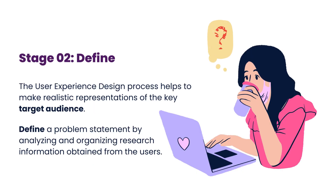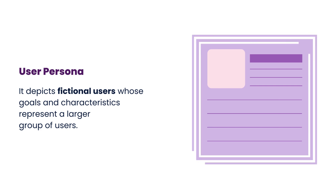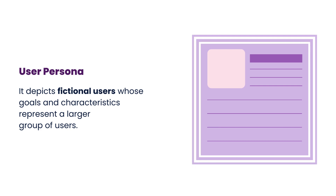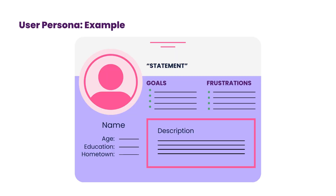Stage 2: Define. The user experience design process helps to make realistic representations of the key target audience. Define a problem statement by analyzing and organizing research information obtained from the users. After identifying the user pain points, we create user personas that depict fictional users whose goals and characteristics represent a larger group of users. This can guide when brainstorming ideas for the expected product.